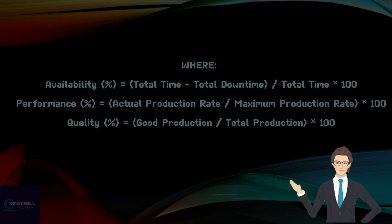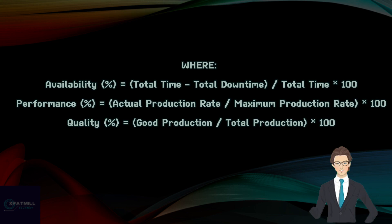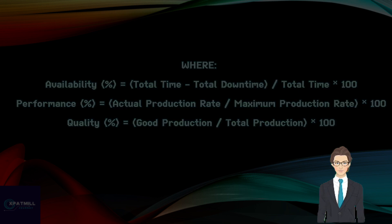Where the availability percent equals total time minus total downtime, divide by total time times 100. Performance percent equals actual production rate divided by maximum production rate times 100.